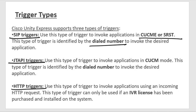The JTAPI trigger — Java Telephony API — is used to invoke applications in CUCM mode only, as opposed to the SIT trigger which works with CUCM Express or SRST. This type of trigger is also identified by a dialed number to invoke the desired application or trigger.